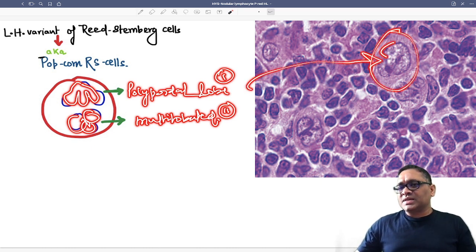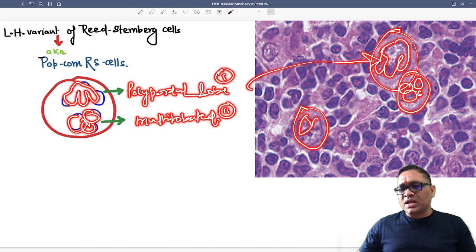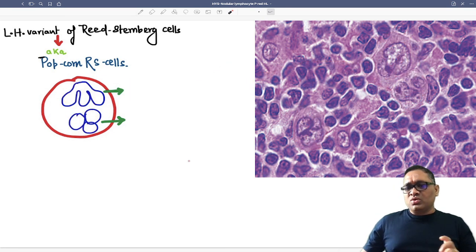This is the entire cell and these are the polypoidal nuclear lobes. This is another one you can see with multi-lobated nuclear lobes. This is also multi-lobated nuclear lobes seen in the cells. This is how you will identify a popcorn Reed-Sternberg cell.